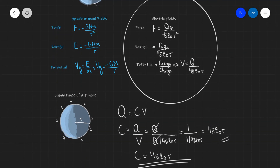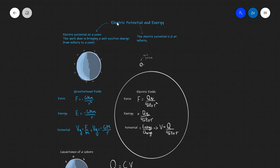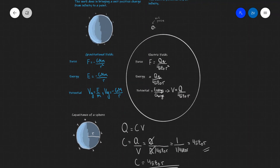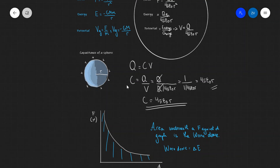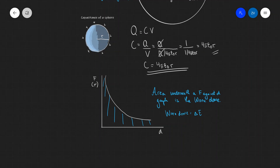Just to summarise — we've done quite a lot today. We looked at the definition of the electric potential: the work done in bringing a unit positive charge from infinity to that point. We compared equations for gravitational and electric fields: force is QQ over 4πε₀R², energy is QQ over 4πε₀R, and potential is Q over 4πε₀R. We derived that the capacitance of a sphere is C = 4πε₀R, depending only on the radius. Finally, we reminded ourselves that the area under a force-distance graph equals the work done. Hopefully this makes sense — thank you very much for watching.